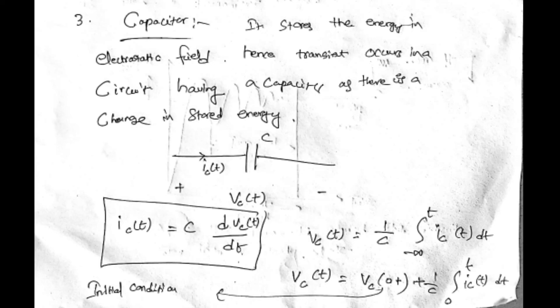Similarly, with initial conditions for the capacitor: v_C(0+) + (1/C) × integral from 0 to t of i_C(t) dt — just as we did for the inductor from minus infinity to t. These are the basic mathematical relationships required for transient analysis. In the next class we will start source-free RL circuit analysis — where a resistor and inductor are connected in series without any source — and discuss how it behaves during transient analysis.